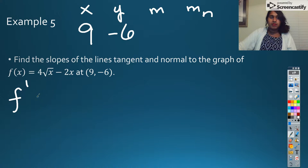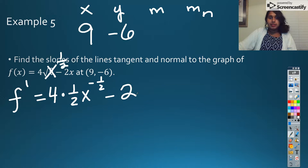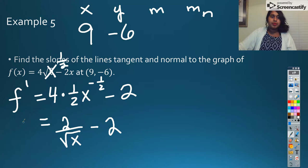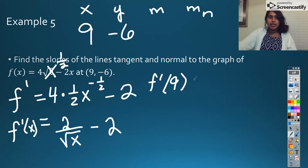So I go ahead and start with f prime. And that's going to be that constant multiple stays on the outside. This is really, if we pause, we know that that's actually x to the 1 half. So I bring that 1 half down and subtract 1 from my exponent. So that's negative 1 half minus 2. And if I simplify that down, this just turns into a 2 over the square root of x minus 2. So now I'm going to plug it in. So this is f prime of x. Well, I want to know what f prime of, what's my x value? 9.